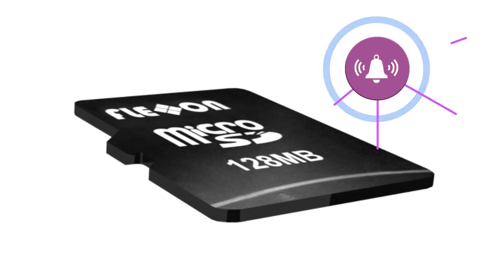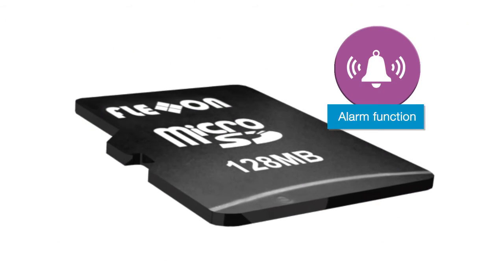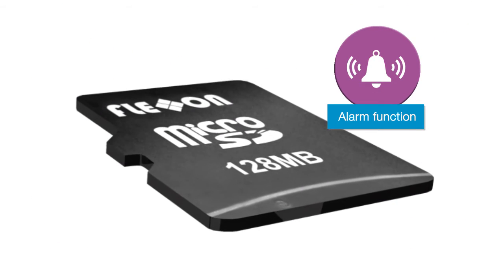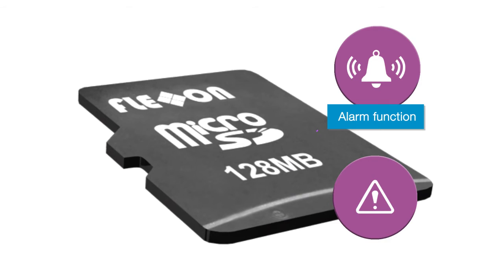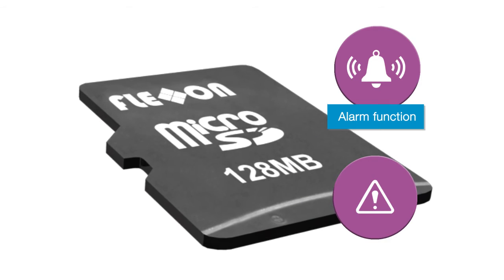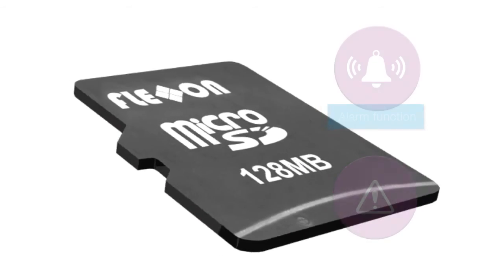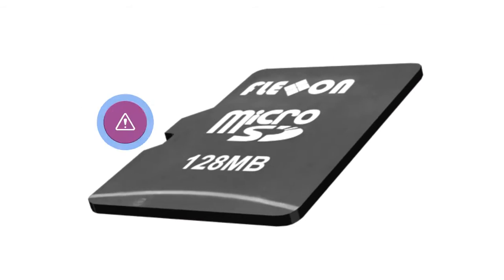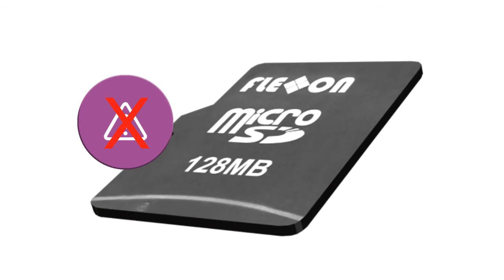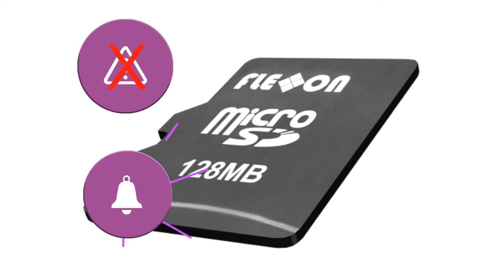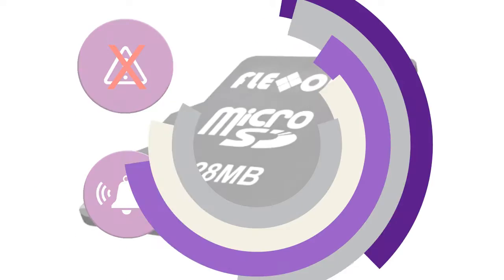The alarm function alerts the user when the card reaches a critical stage based on set parameters. It preempts the possibility of application failure, as you can replace the flash memory when the alarm goes off.